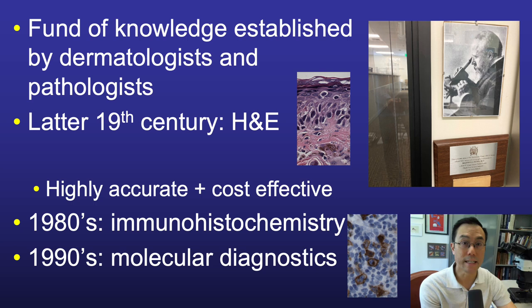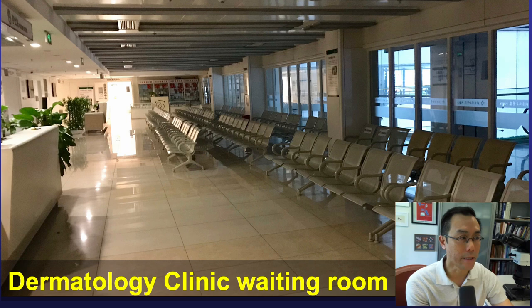The 1970s and 80s saw the advent of immunohistochemistry, now an indispensable component of our armamentarium and sometimes absolutely required for the diagnosis of certain tumors. Then, since the 1990s, the advent of molecular diagnostics — also now indispensable for a relatively small set of tumors. Skin specimens are obtained and submitted by a wide variety of healthcare providers, but the single biggest source is of course the dermatologist's office.